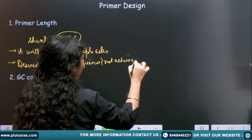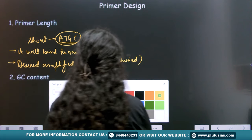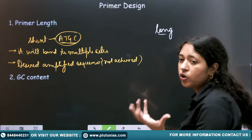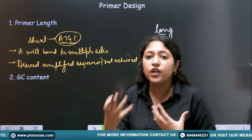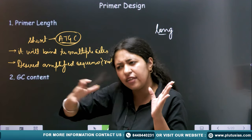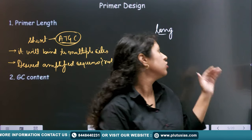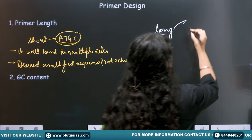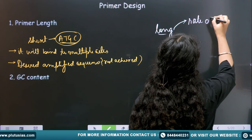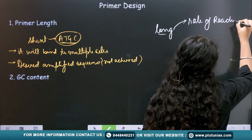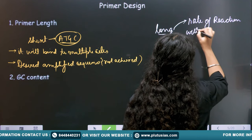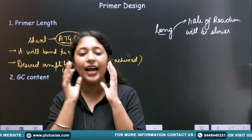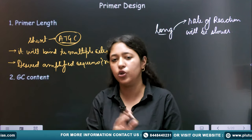If the primer sequence is very long, the demerit is that the rate of the reaction will be very slow. We don't want to waste our resources. So if the primer length is very long, it will slow down the rate of reaction. That is why the ideal length of the primer should be 15 to 20 nucleotides.